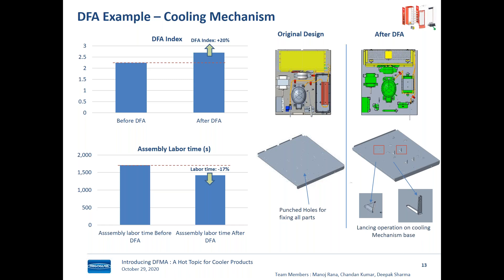The labor time savings for this operation were 17 percent. The total cooling mechanism labor cost contribution is about 23 percent on average, and about half of that is in the cooling mechanism base assembly — so we're talking about almost a 2% improvement in total labor cost per unit from this simplification alone. It may not sound like much, but in a business where profit margins are also single-digit, this is actually quite significant.